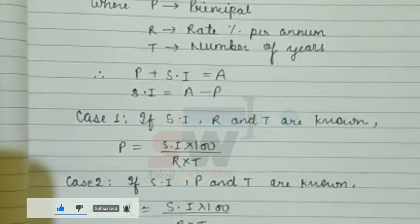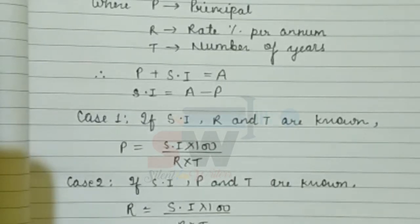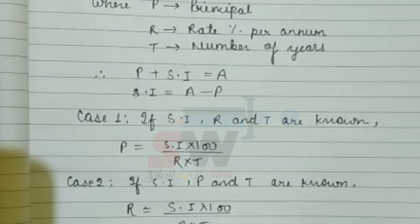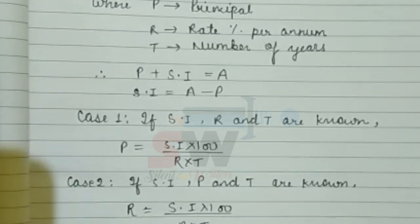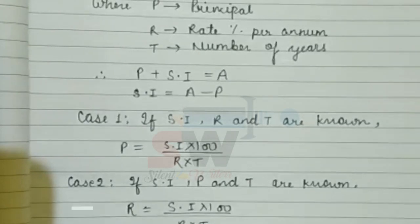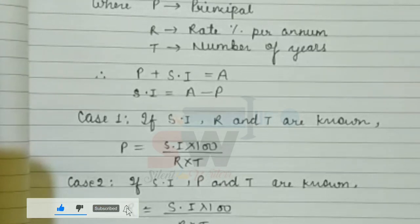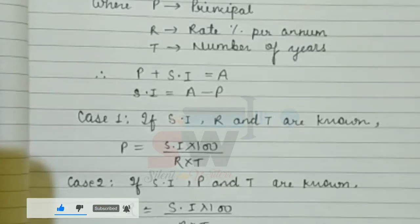Case 3 will be when SI, P, and R are known, then T equals SI × 100 divided by P × R.